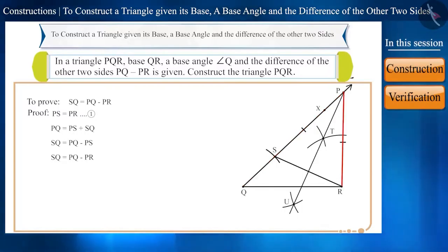That is, the length of side SQ is equal to PQ minus PR. Therefore, our construction is correct.